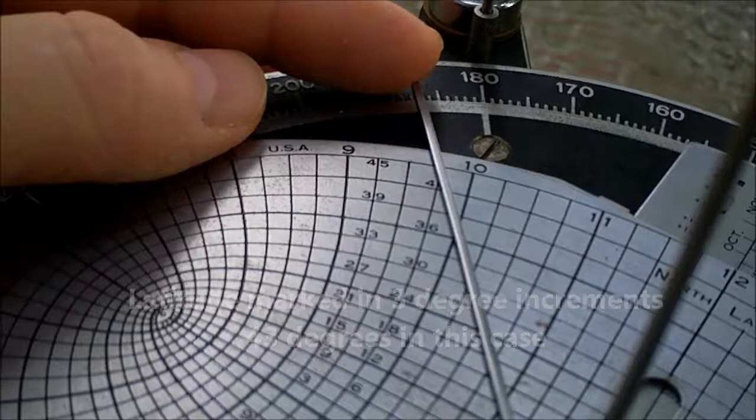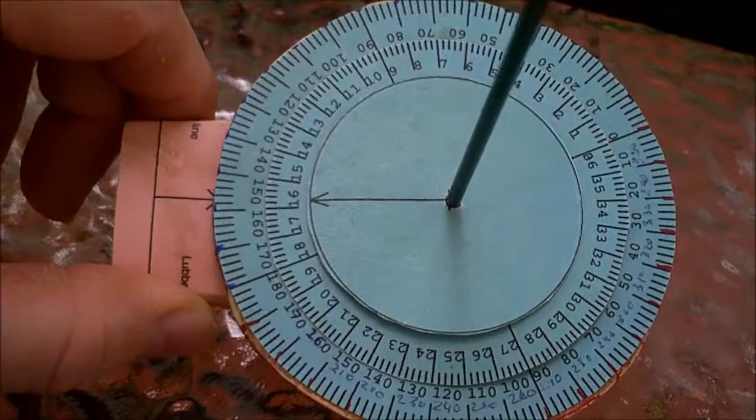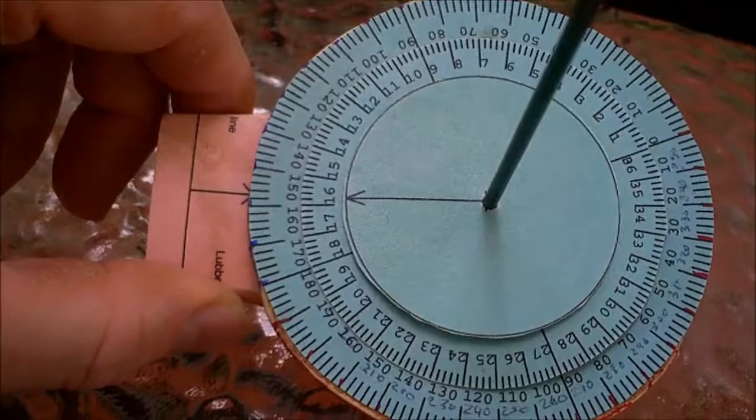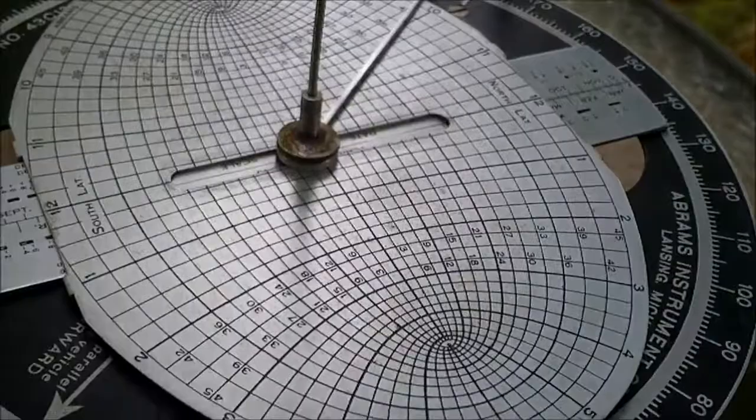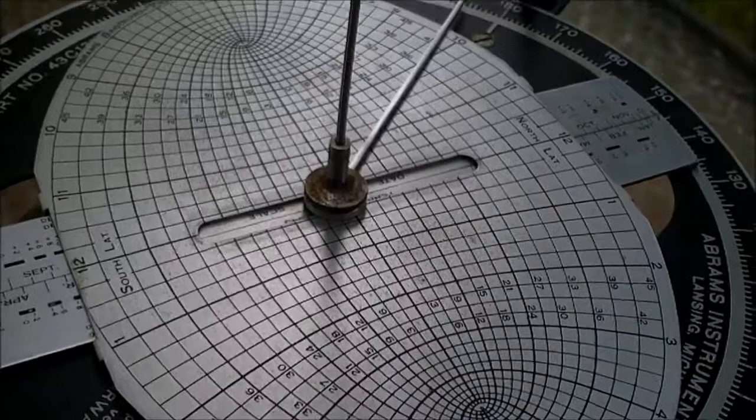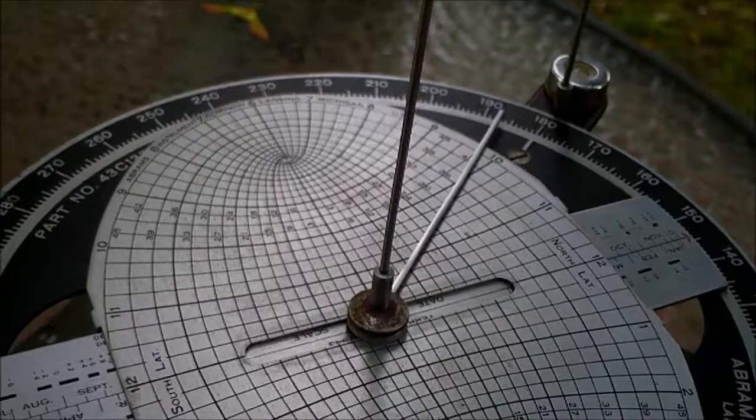One other advantage I think the Bagnold Sun Compass has is that you could make one. I've thrown one together with paper plates and it's reasonably accurate so in an emergency you could make one. Obviously all of those hyperbola lines would be pretty much impossible to replicate in the field in an emergency situation so this compass is good and accurate but not something you could easily make yourself.